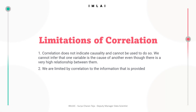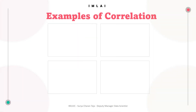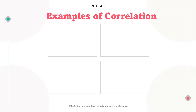Let's look into some examples of correlation and then wrap this up. We'll understand some real-life examples and see what a negative correlation means, what a positive correlation means, and what no correlation means at all.